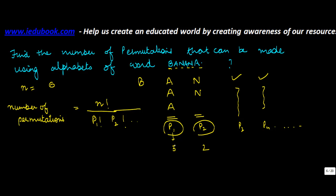So in this case, P1 is equal to 3, P2 is equal to 2. So you write this as factorial 6 upon factorial 3 into factorial 2. Now factorial 6 can be written as 6 into 5 into 4 into factorial 3 upon factorial 3 into factorial 2, which is 2 into 1. This knocks off with this. 2 goes into 4 two times. So 2 into 5, 10 into 6, 60. So there can be 60 permutations that can be formed using alphabets of the word banana.